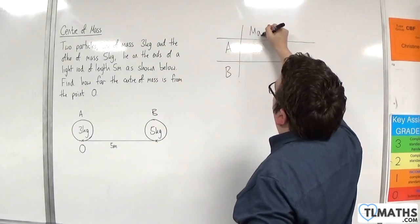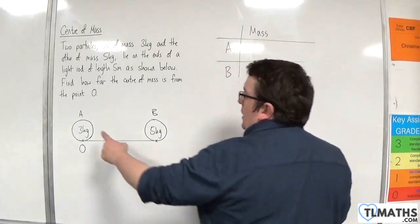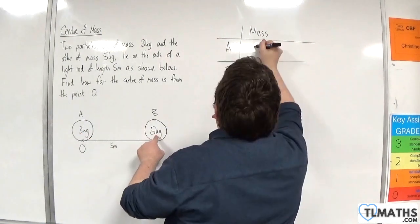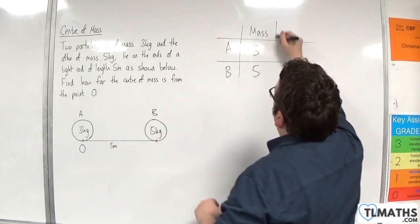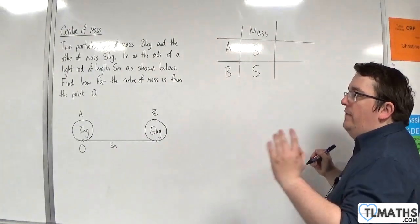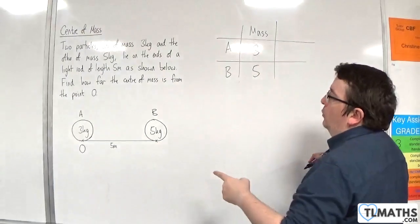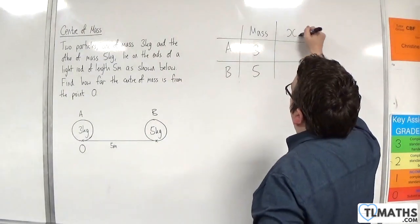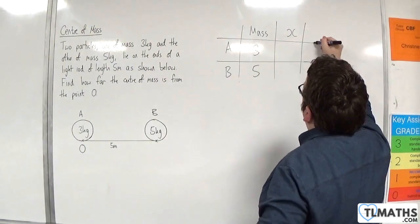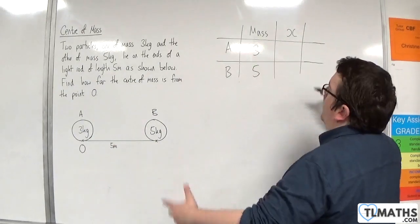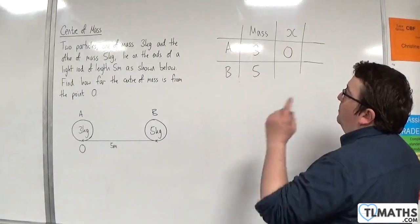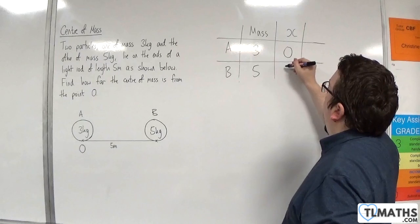We have their mass, which is 3 kilos and 5 kilos, respectively. And then they have a distance away from O. So, let's call that X. Now, A's distance from O is 0, and B's distance from O is 5 metres.